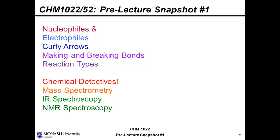Then we'll talk about some reaction types. Here, this element which we're calling B — notice it's got a lone pair and it's got a negative charge. This is our nucleophile. And element A is a cation with a positive charge — this is our electrophile. The nucleophile has that spare pair of electrons and a nominal negative charge. A curly arrow depicts the movement of these electrons, and in this case that pair of electrons on the nucleophile is moving towards the electrophile. What those two electrons are going to do is form a new bond between A and B — in other words, we've just made a new chemical bond.